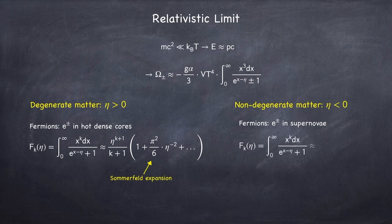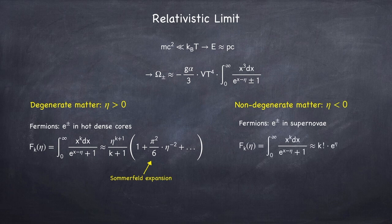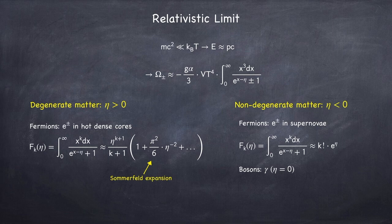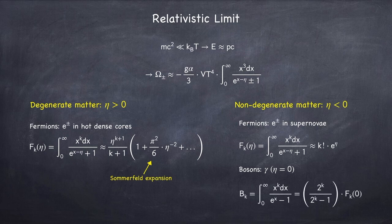the kth Fermi integral can be approximated as k factorial times e to the eta. The only relativistic non-degenerate bosons we will be dealing with are photons, and they have a chemical potential of zero. In the case of eta equals zero, there is a useful relationship to go from the kth Bose integral to the kth Fermi integral.